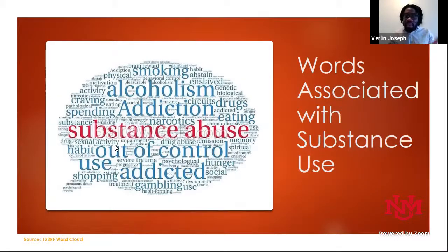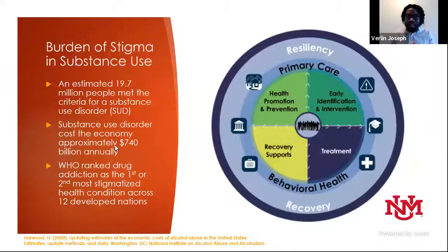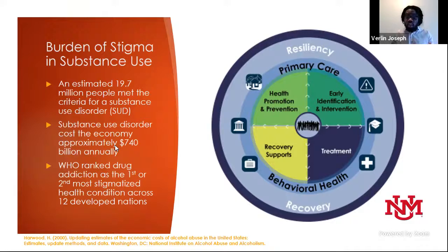Commonly used words to describe people with substance problems include terms like addiction, abuse, and out of control, but we can also use terms like brave and career-driven individuals — having a substance use disorder does not define the individual. Substance use has become a leading public health matter, with nearly 20 million Americans having trouble managing their substance use, resulting in nearly 740 billion dollars each year in lost wages, hospitalizations, and treatment. Substance use is one of the most stigmatized conditions worldwide, acting as a barrier to treatment, discouraging support, and preventing intervention efforts.